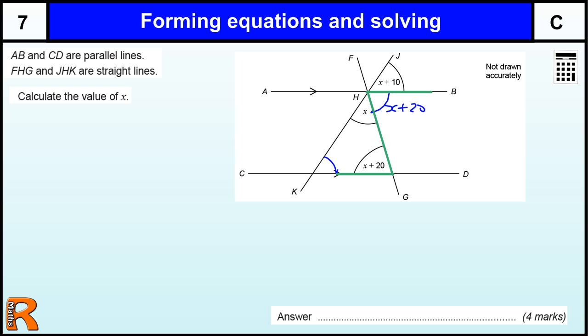The other one we can use is the F shape. If I draw the F there, it's a bit upside down and back to the front, but if you spun that around it would look a bit like an F. That's the corresponding angle rule. That one tells us that this angle and this angle are the same.